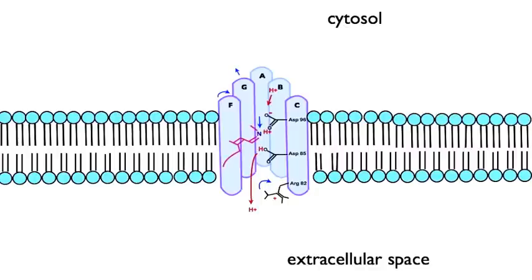The reprotonation of retinal causes it to return to its pink 13-cis configuration and the F and G helices move back to their respective positions. Arginine 82 on helix C is also repositioned.